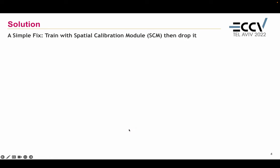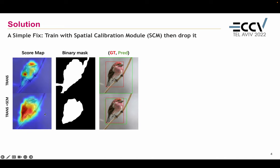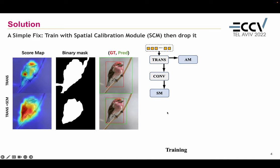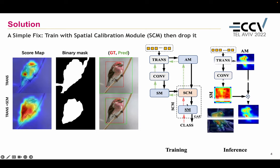We provide a simple fix: train with SCM and then drop it. Our result is much more reliable after using SCM, and our training pipeline is very simple. We just incorporate SCM as an external module into the original pipeline during training. This pipeline updates the parameters of the original pipeline via back propagation, and during inference, we just use the original pipeline to predict the result. It turns out that SCM implicitly calibrates the attention representation of the Transformer to produce more meaningful results.